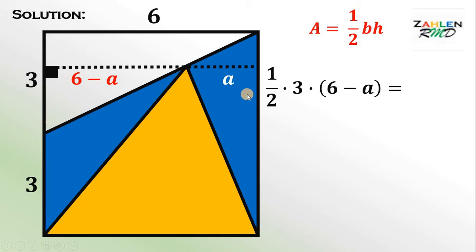Now, the area of the blue triangle on the right side is equal to 1 half times the base, which is the side of this square, or simply 6, times the height, which is equal to A.